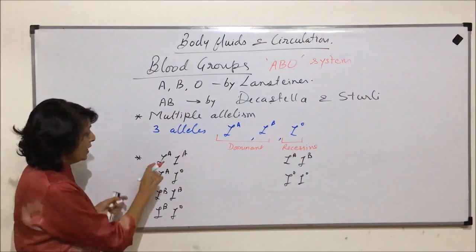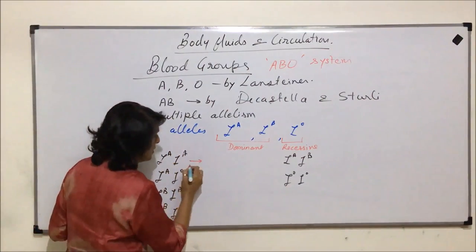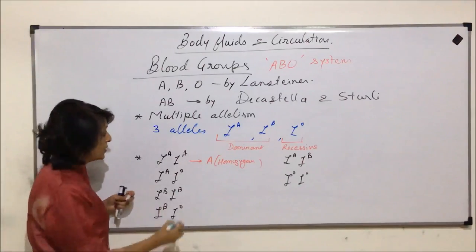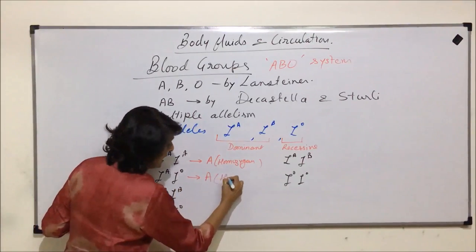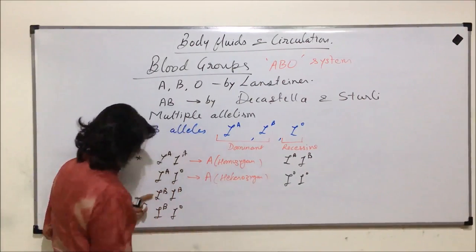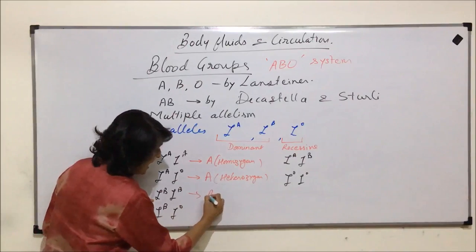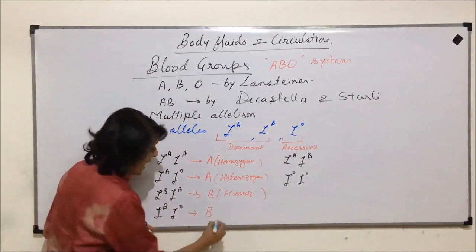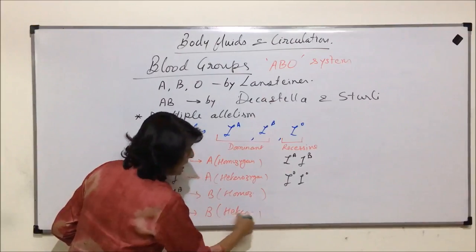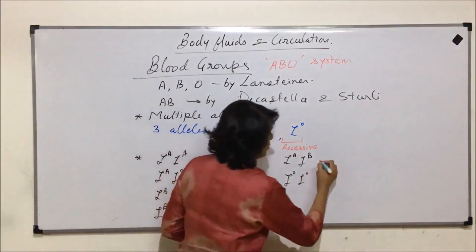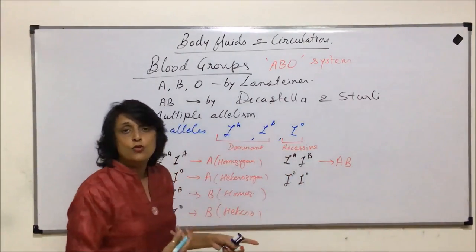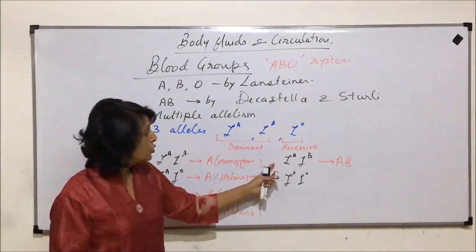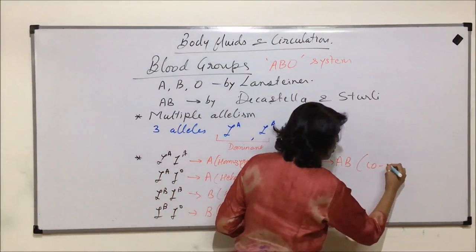When both alleles are IA, the blood group is A (homozygous). IA IO also gives blood group A but is heterozygous. IB IB gives blood group B (homozygous), and IB IO gives blood group B (heterozygous). IA IB gives blood group AB — since both genes are dominant and express themselves, AB blood group is an example of codominance.